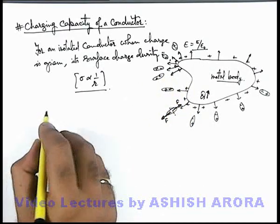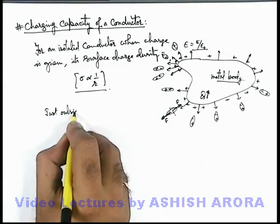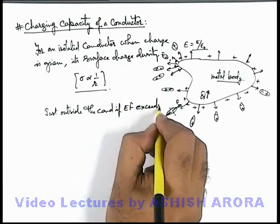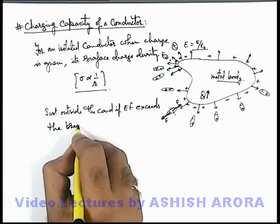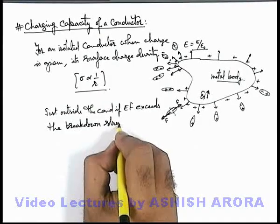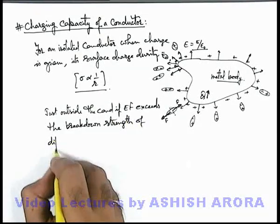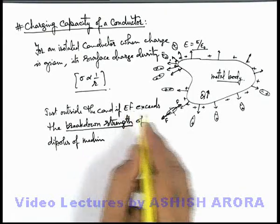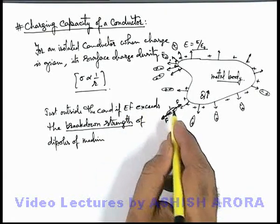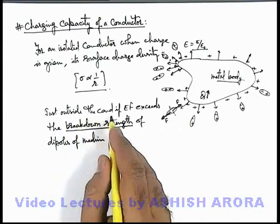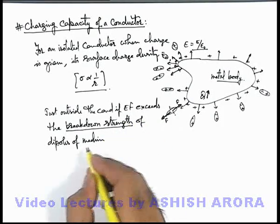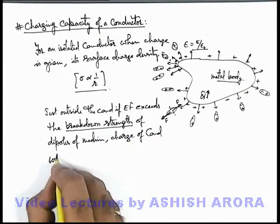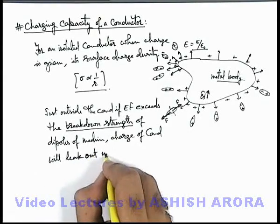So here we can write: just outside the conductor, if the electric field exceeds the breakdown strength of the dipoles of the medium — where breakdown strength is the maximum electric field up to which the dipoles can persist, and beyond which the dipoles will break due to the stretching force — we can say just outside the conductor, if the electric field exceeds the breakdown strength of the dipoles of the medium, the charge of the conductor will leak out into the surrounding medium.